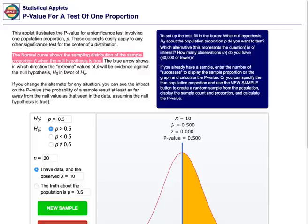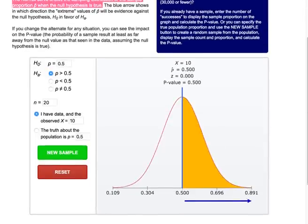The instructions also tell us that the blue arrows underneath the curve show us the direction of the extreme, that is, the values of the sample proportion that show more evidence against the null hypothesis and thus in favor of the alternative hypothesis.